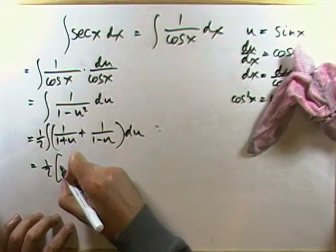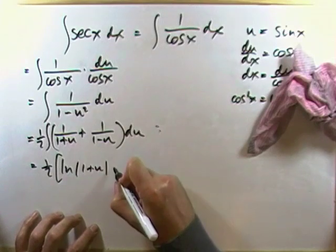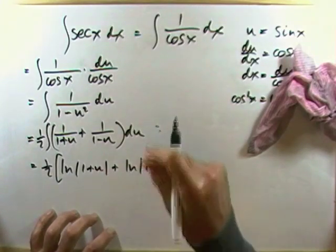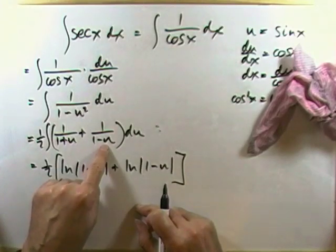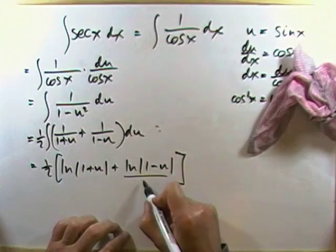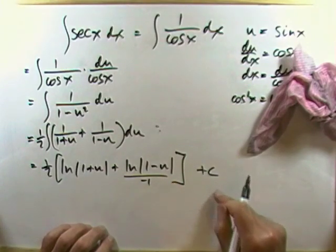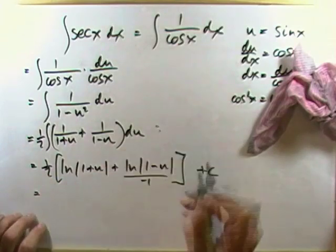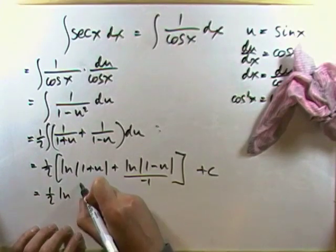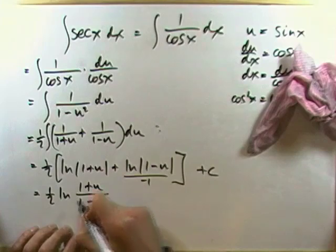So I've got a half of ln of 1 plus u plus ln of 1 minus u. But for the second term, the derivative of 1 minus u is negative 1, so that term has to be divided by negative 1. So this becomes a half of ln of 1 plus u minus ln of 1 minus u, giving a half of ln of 1 plus u over 1 minus u.